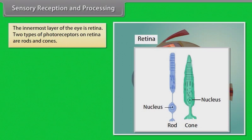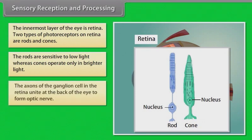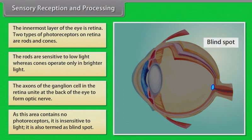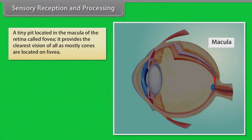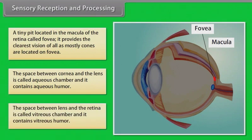The smooth muscles of the iris regulate the diameter of the pupil. The innermost layer is the retina, which contains two types of photoreceptors: rods, sensitive to low light, and cones, which operate in brighter light. The axons of ganglion cells unite at the back of the eye to form the optic nerve. This area contains no photoreceptors and is called the blind spot. The fovea, located in the macula, provides the clearest vision as it is densely packed with cones. The space between cornea and lens is called the aqueous chamber.